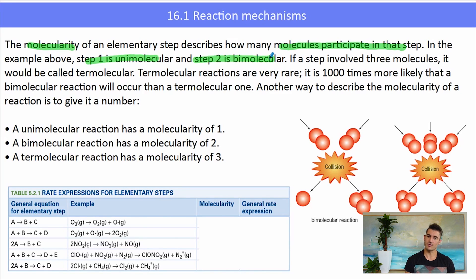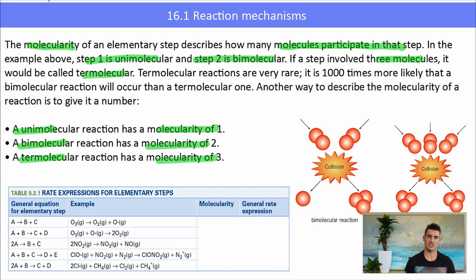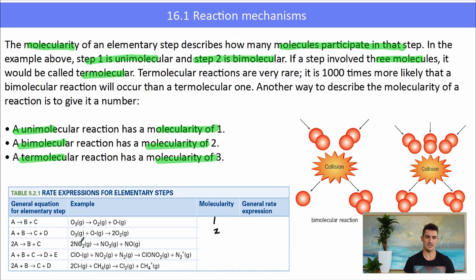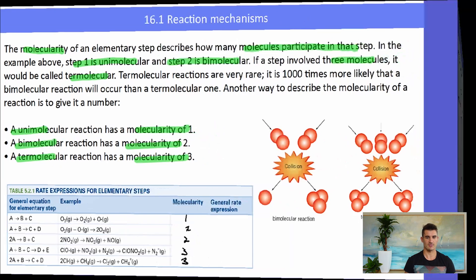Thinking back to the ozone example, the first step was unimolecular because it had one molecule, and step two was bimolecular — two molecules were needed. A unimolecular reaction has a molecularity of one, bimolecular a molecularity of two, and termolecular has a molecularity of three. Going through this simple table, we can see the different types of molecularities for the different types of reactions.